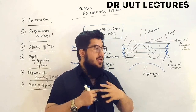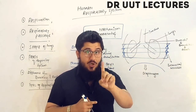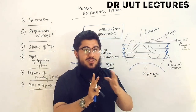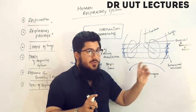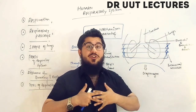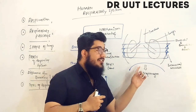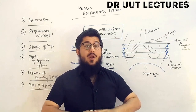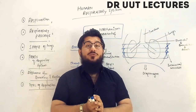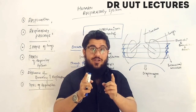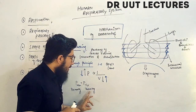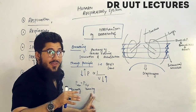During inhalation, the intercostal muscles — which are of two types, internal and external — contract, causing the rib cage to move outward. The diaphragm also contracts and moves downward. As a result, the lungs get more space, so the volume of the lungs increases. According to Boyle's Law, if the volume increases, the pressure inside the lungs — the intrapleural pressure — will decrease.